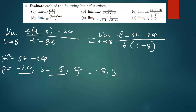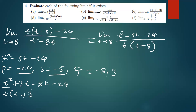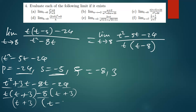We replace the middle term with the factors: t squared plus 3t minus 8t minus 24. The common factor of the first two terms is t, so factoring out t gives t(t plus 3). Factoring negative 8 from the last two terms gives negative 8(t plus 3). So the common factor is (t plus 3), leaving us with (t plus 3)(t minus 8).